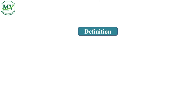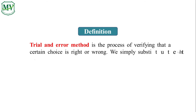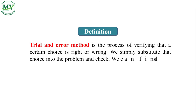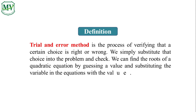Now, what about trial and error method? Trial and error method is the process of verifying that a certain choice is right or wrong. We simply substitute that choice into the problem and check if the given value satisfies the equation or not. We can find the roots of a quadratic equation by guessing a value and substituting the variable in the equation with the value.